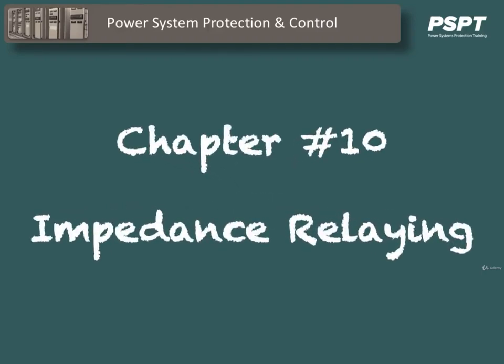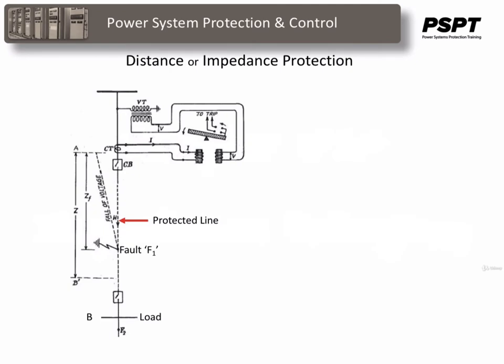Chapter 10: Impedance Relaying. Distance relays are double actuating quantity relays with one coil, the restraining coil, energized by voltage, which by virtue of being connected to a PT or VT is proportional to the line voltage at the relay location. The other coil, the operating coil, is energized by current, proportional due to its connection to a CT, to the line current at the relay location.